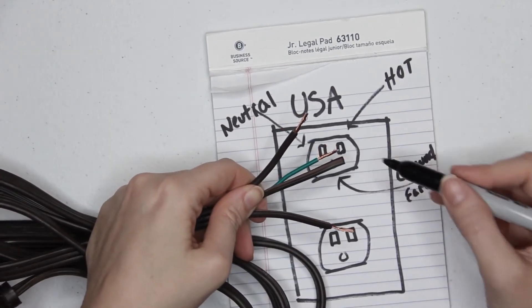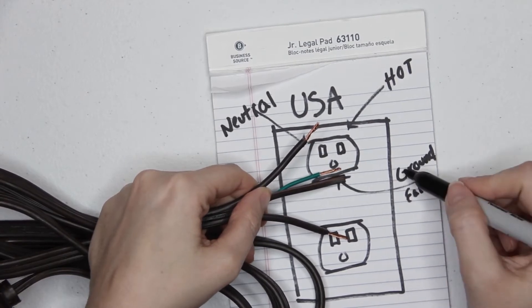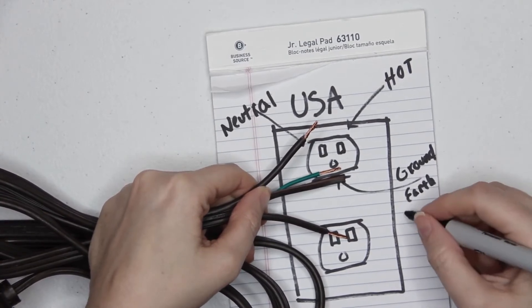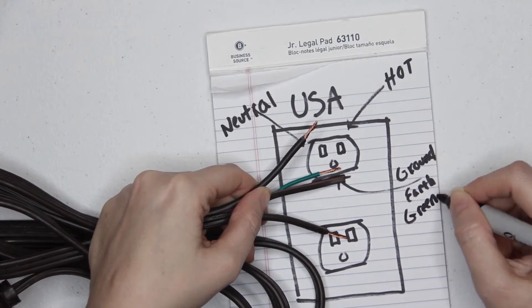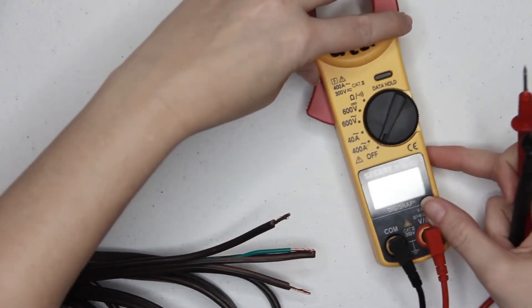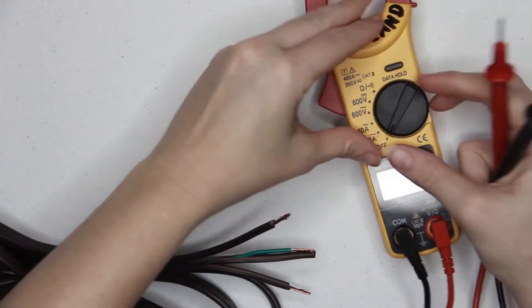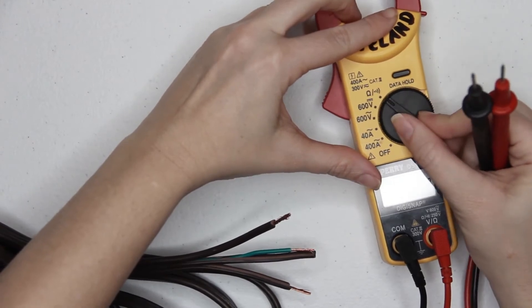Now looking at the extension cord, we know that the green is going to be the ground wire. The smooth brown wire is going to be hot, and the ribbed wire is going to be neutral. We can prove this by doing a continuity test.